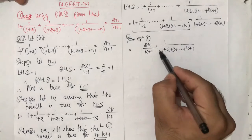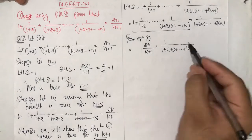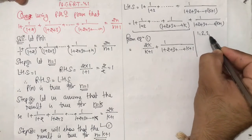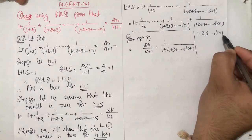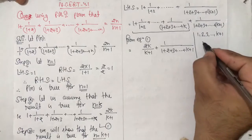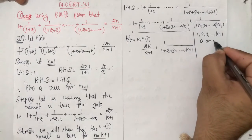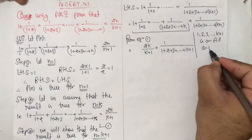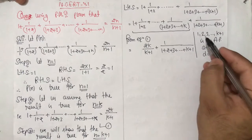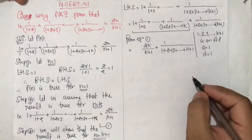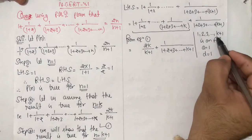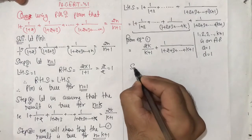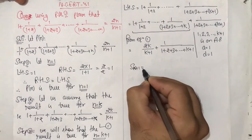Now let us find the sum of the denominator. The terms are 1, 2, 3 and so on up to k plus 1. This is an AP with first term a equal to 1, common difference d equal to 2 minus 1 equal to 1, and number of terms equal to k plus 1. Sum of k plus 1 terms is (k plus 1) by 2 into 2a plus (number of terms minus 1) into d.